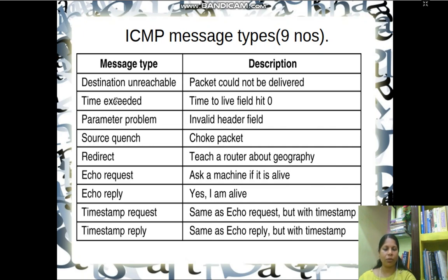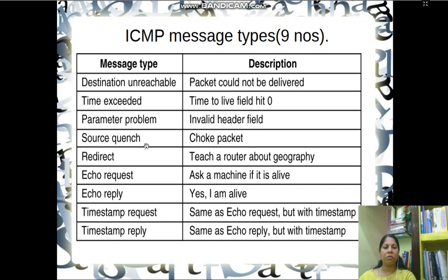This time exceeded message is sent to the source machine so that it can resend the packet. At the next transmission, the source machine can also increment the time-to-live field value. The third message type is parameter problem, which means an invalid value exists in the header field, so the packet cannot be routed to the correct destination. The fourth is source quench — a message to the source machine saying it should reduce the speed at which packets are being produced, as the current rate can lead to congestion. It serves as a warning message to the source machine.